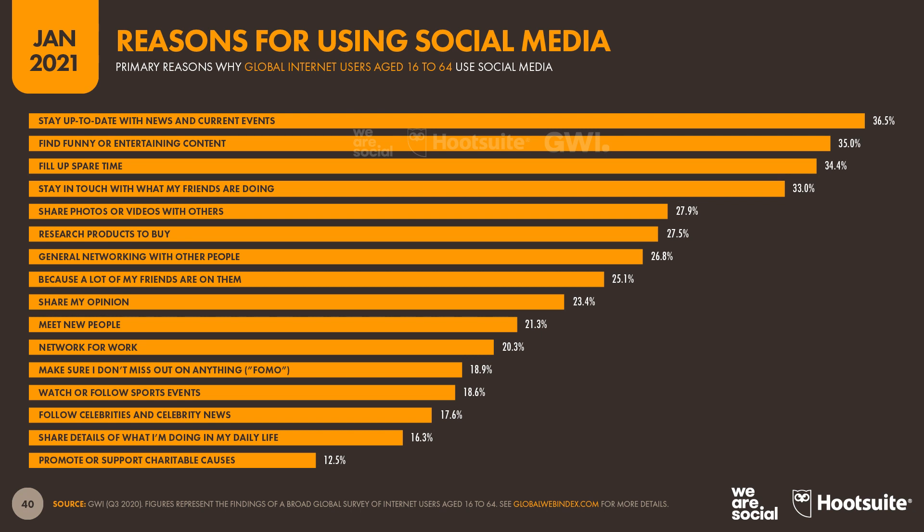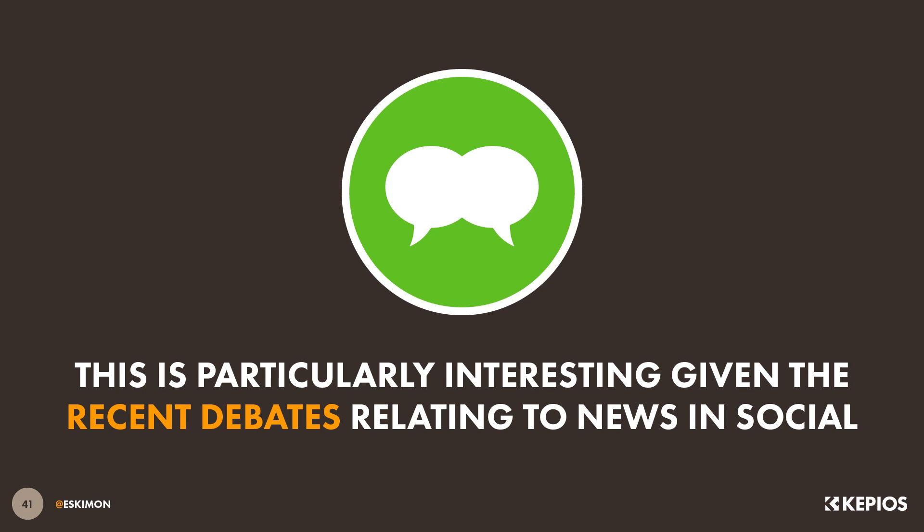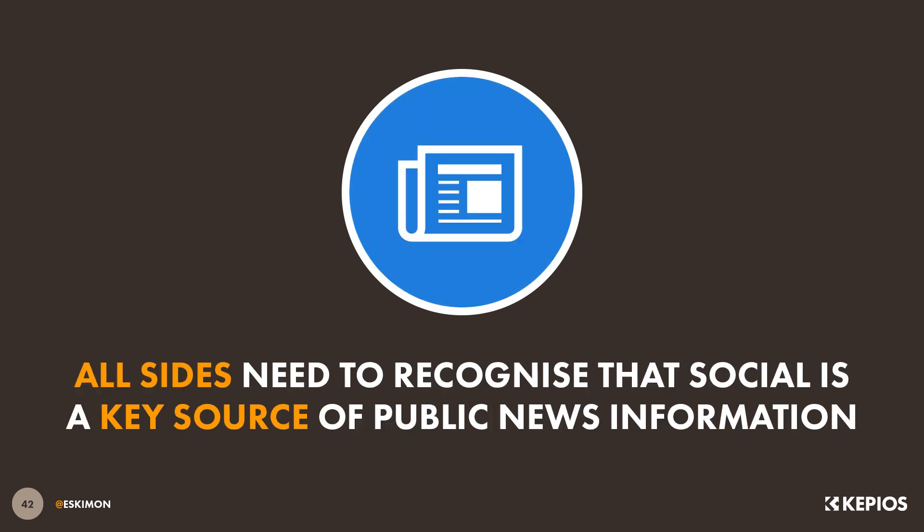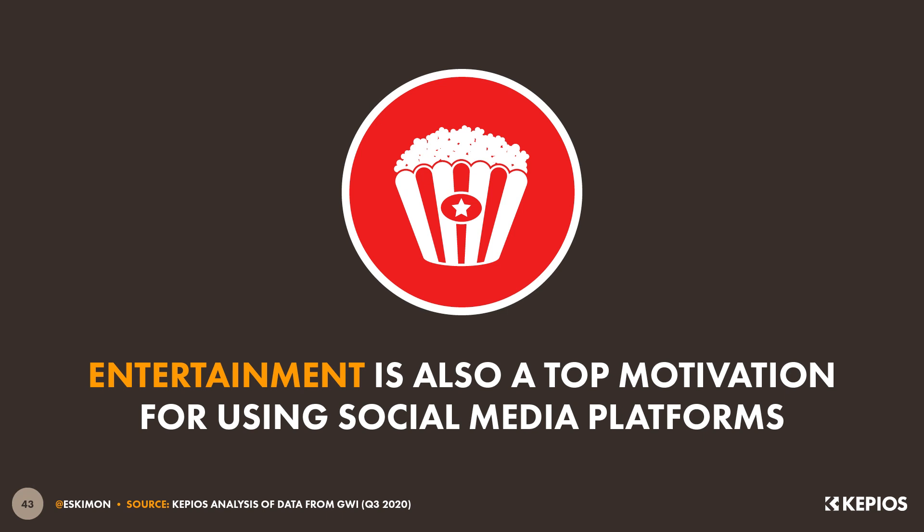People also show diversity when it comes to their reasons for using social media, although the rank order of these motivations may surprise you. For example, staying up to date with news and current events is the number one reason for using social media at a global level, with more than a third of internet users saying this is one of the primary reasons they turn to social channels. I find this particularly interesting given the ongoing conversations about whether Facebook and Google should be paying for the news content that appears in their feeds. The data clearly shows that entertainment is a top motivation too, which may help marketers to understand how to segment their various activities across different digital environments.